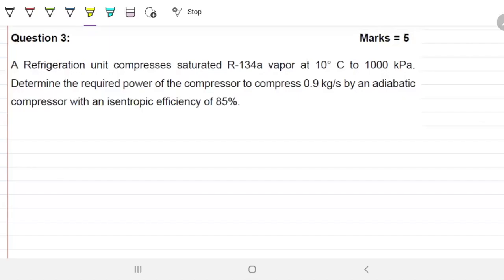Refrigeration unit compresses saturated R-134A vapor at 10 Celsius to 1,000 kilopascals. Determine the required power of the compressor to compress 0.9 kilograms per second by an adiabatic compressor with an isentropic efficiency of 85%. Okay, so this is a simple question in my opinion.